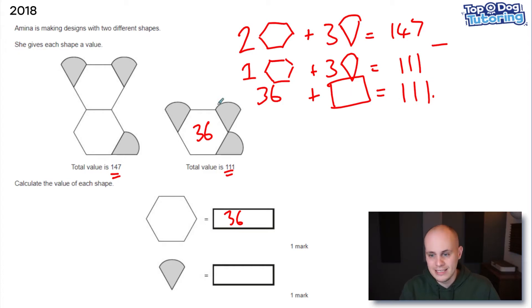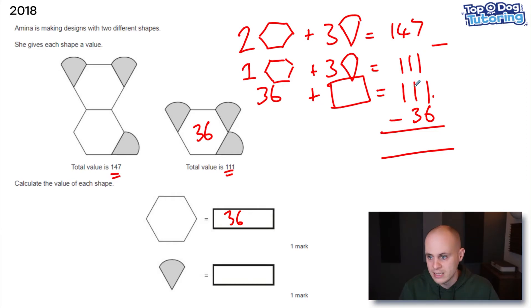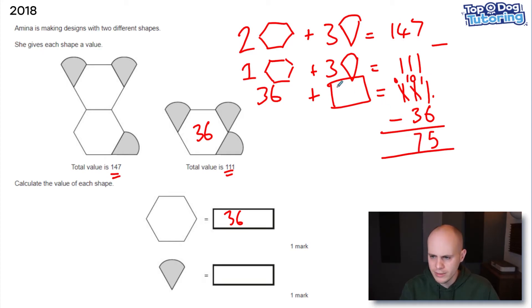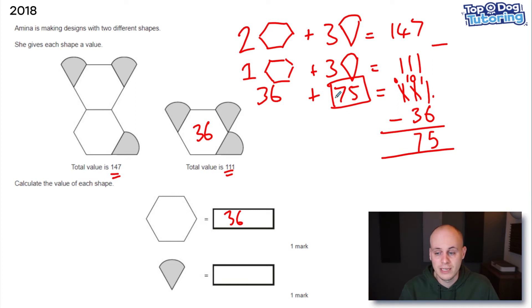Focusing on the second equation: 36 plus three ice cream cones equals 111. I need to work out what the three cones total, so I do 111 take away 36. Let's do it in columns — 11 take away 6 is 5, 0 take away 3 we can't do, so we exchange: 10 take away 3 is 7. So that total value is 75. I've seen children write 75 as the answer, but three ice cream cones have the value of 75 — each one is 75 divided by 3.